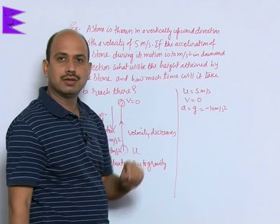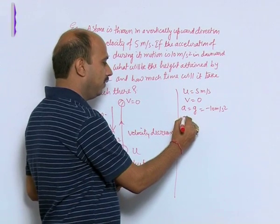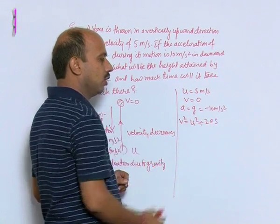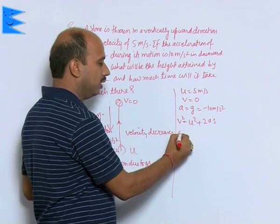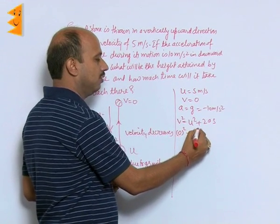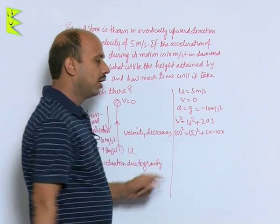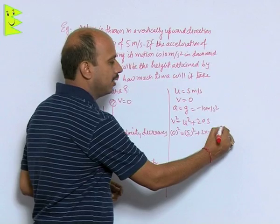Now, first we have to calculate height attained. See here v square is equal to u square plus 2 a s. We can replace all these values here: 0 here, 5 square plus 2 into minus 10 into s. We can replace s by height h.